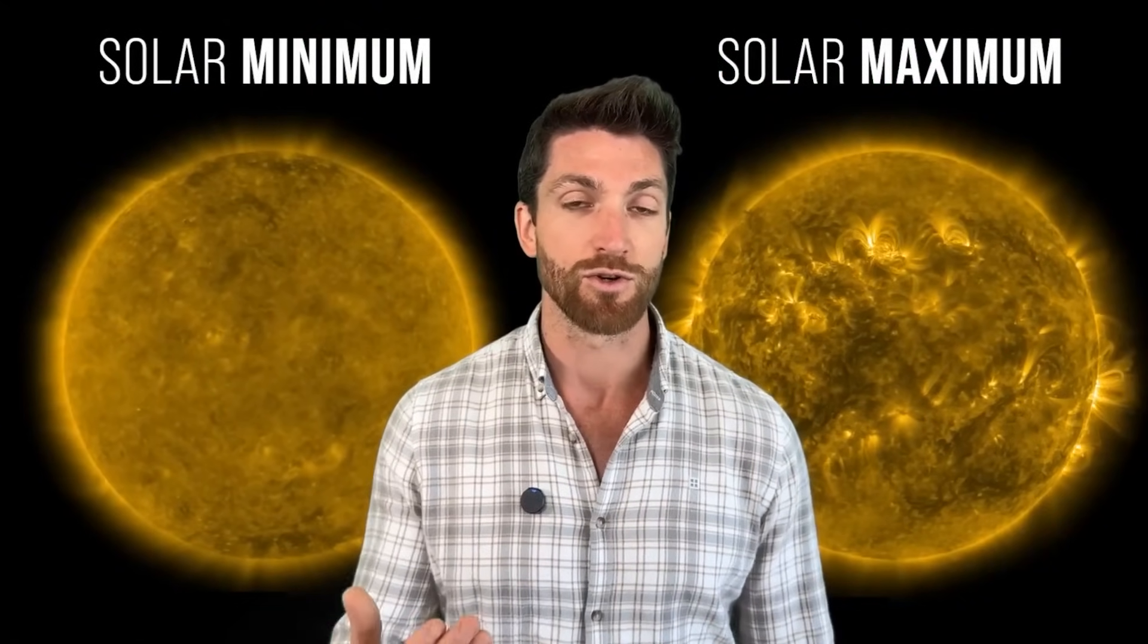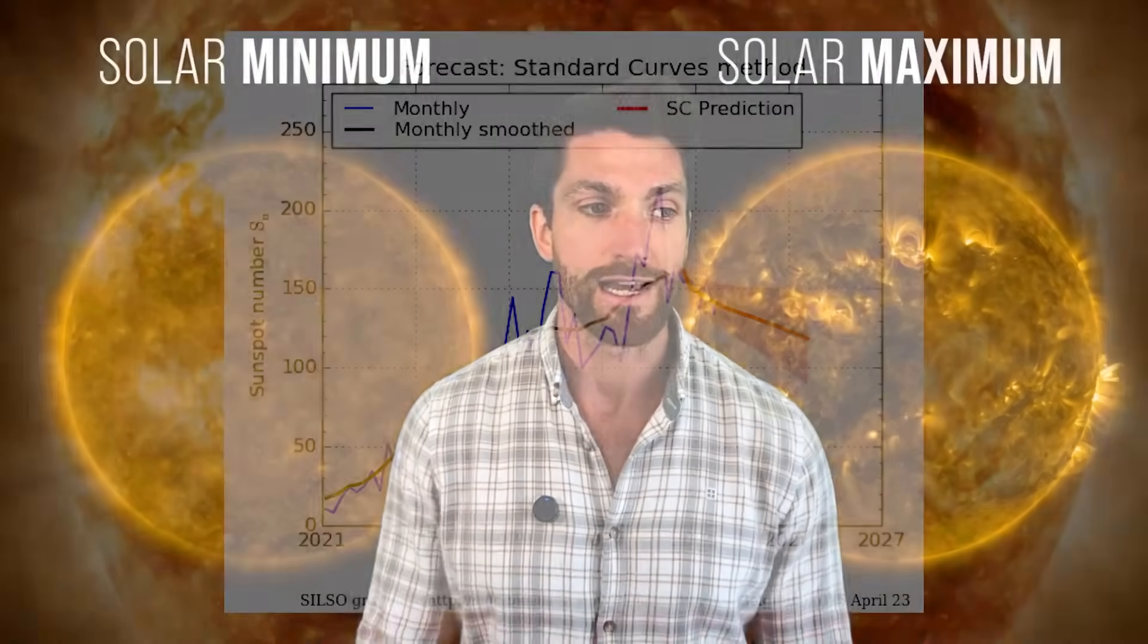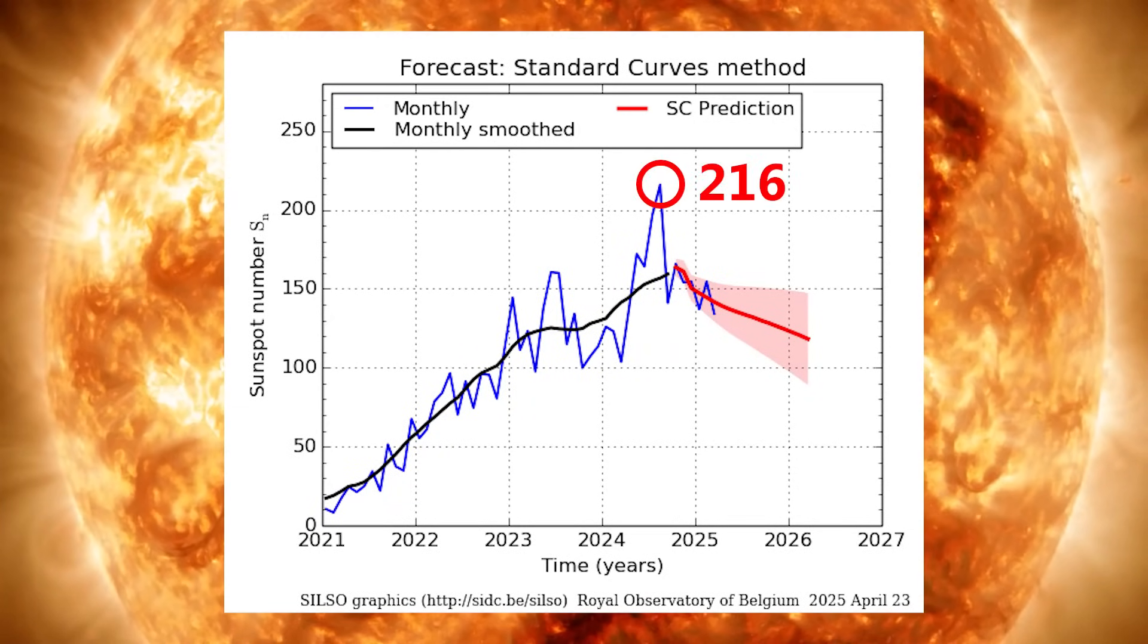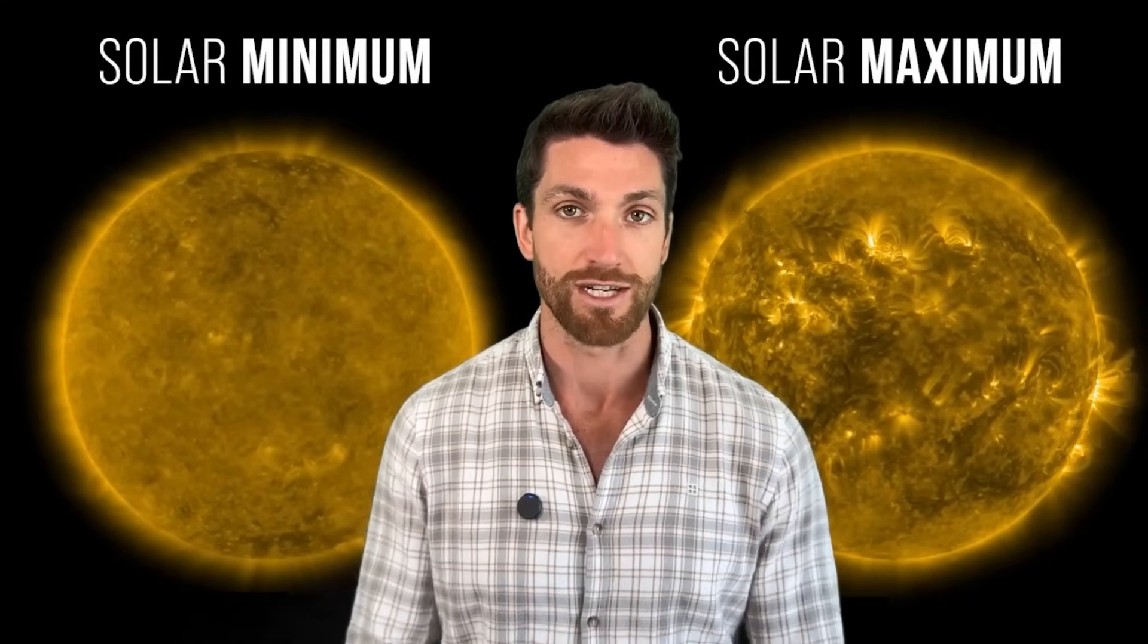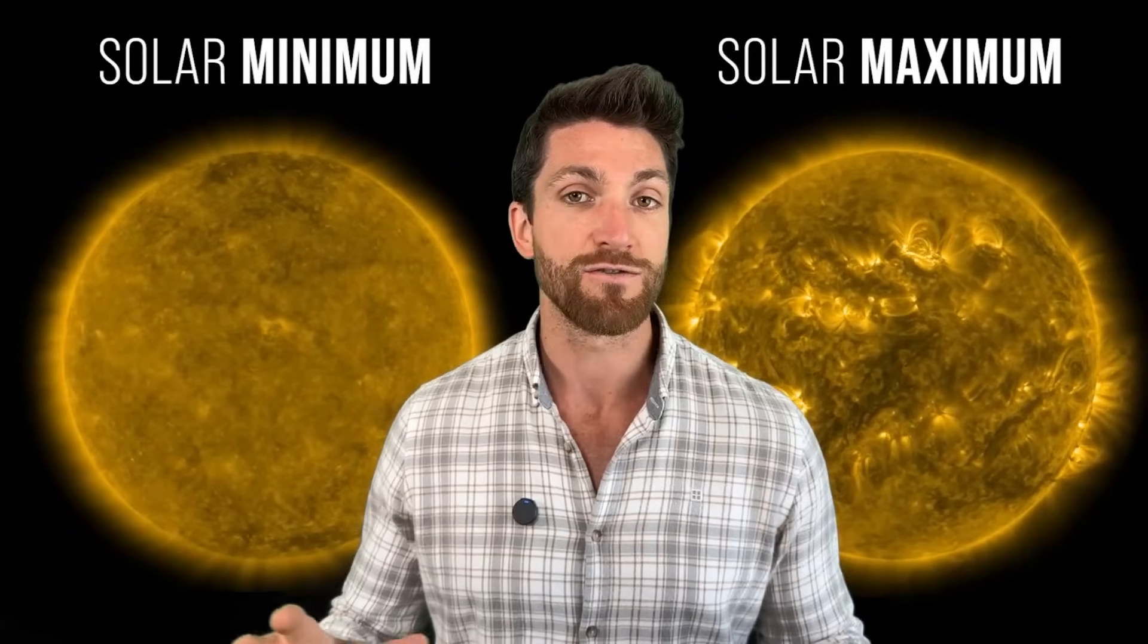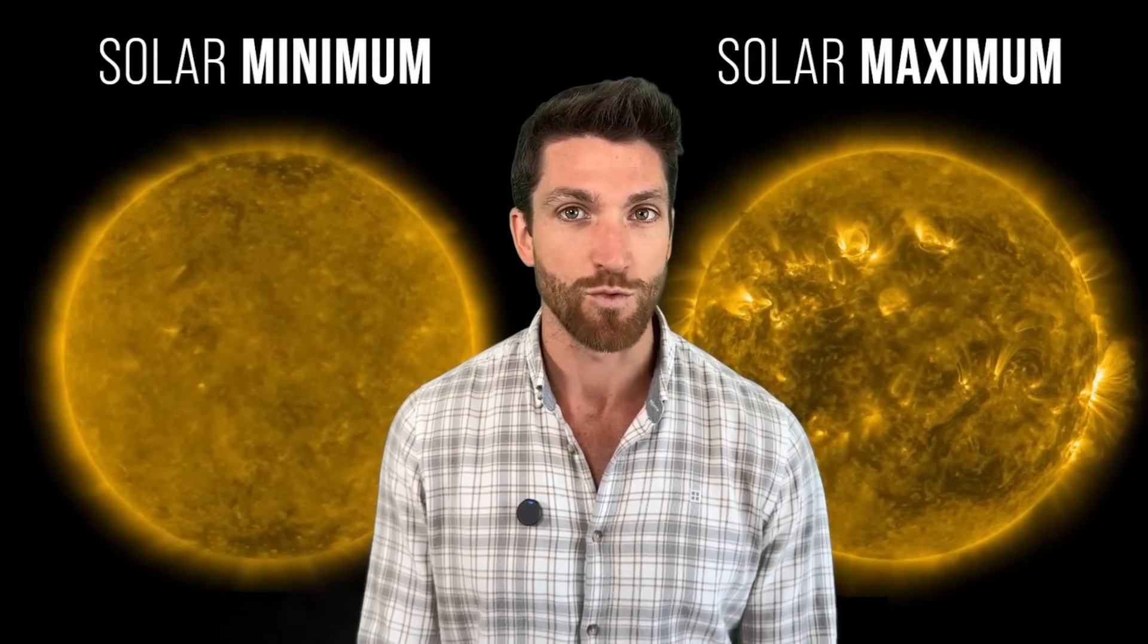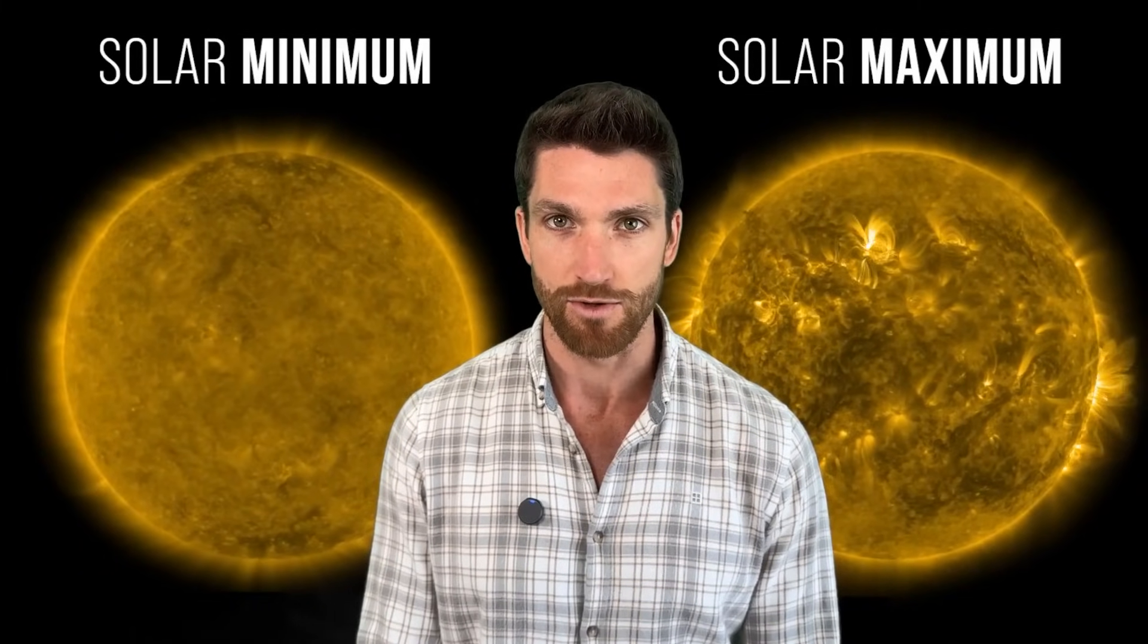We are right now in solar cycle 25 maximum. This period lasts about three years, and the recent sunspots high for solar cycle 25 maximum was August of 2024. So we are still very much in solar cycle 25 maximum, but if we look at the longer time frame, the past 50 years of data, it appears that the solar magnetic field is weakening and we don't know if this trend is going to end anytime soon.